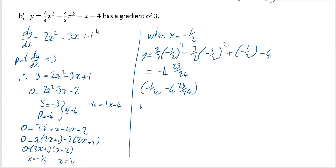We've got to find the other one. This is when x equals 2. Your y value is going to be 2/3 times 2 cubed minus 3/2 times 2 squared plus 2 minus 4. If you file that into your calculator, you'll get minus 2 and 2 thirds. So your answer for this one is 2 and minus 2 and 2 thirds.